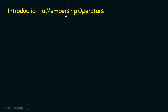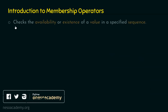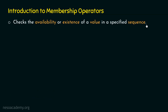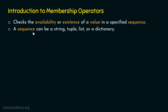What is a Membership Operator? A Membership Operator checks the availability or existence of a value in a specified sequence. It has the capability to check the existence of a value in a specified sequence. A sequence can be a string, tuple, list, or a dictionary. A Membership Operator can check the existence of some value in any of these sequences.